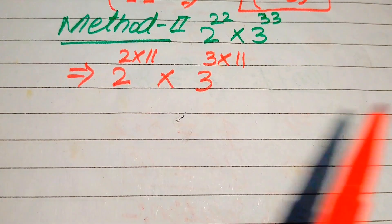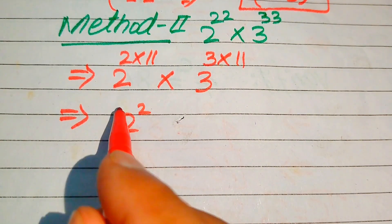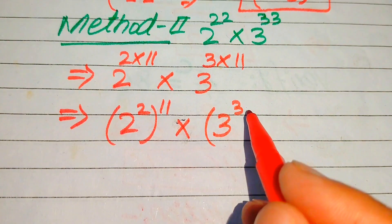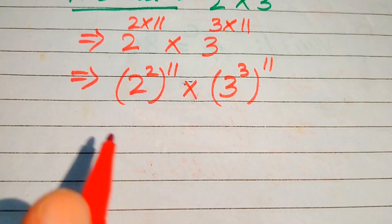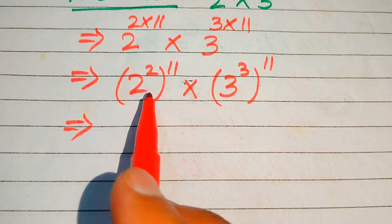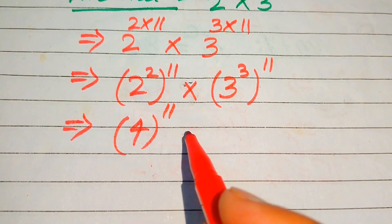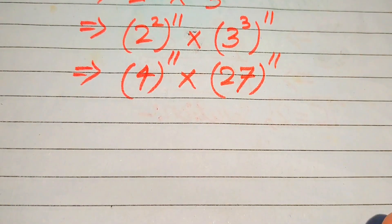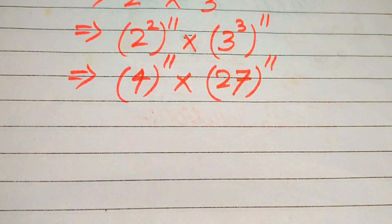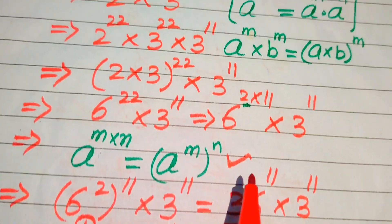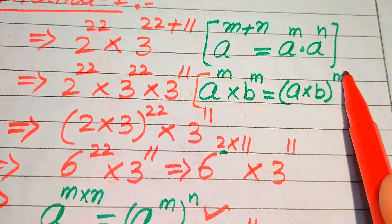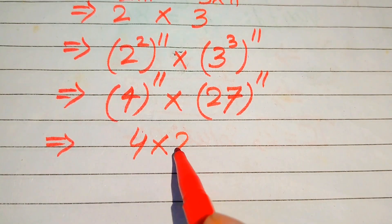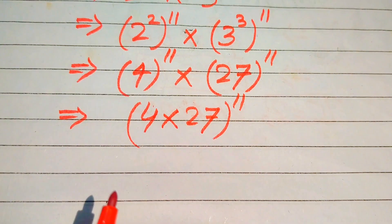According to the exponent law, we move the inner exponent out: 2 squared to the power of 11, multiplied by 3 cubed to the power of 11. Now 2 squared equals 4 and 3 cubed equals 27, giving us 4 to the power of 11 multiplied by 27 to the power of 11. The bases are different but the exponents are the same, so we use the exponent law to combine: (4 multiplied by 27) to the power of 11.